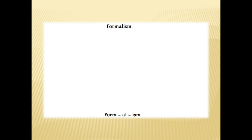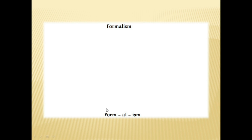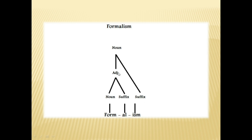We have the word 'formalism'. Formalism is made up of three different morphemes: the root 'form', which is a noun, and then two different suffixes. When we combine the suffix '-al' with the noun 'form', it gives us the word 'formal', which is an adjective. And when we combine the suffix '-ism' with the adjective 'formal', it gives us the word 'formalism', which is a noun.